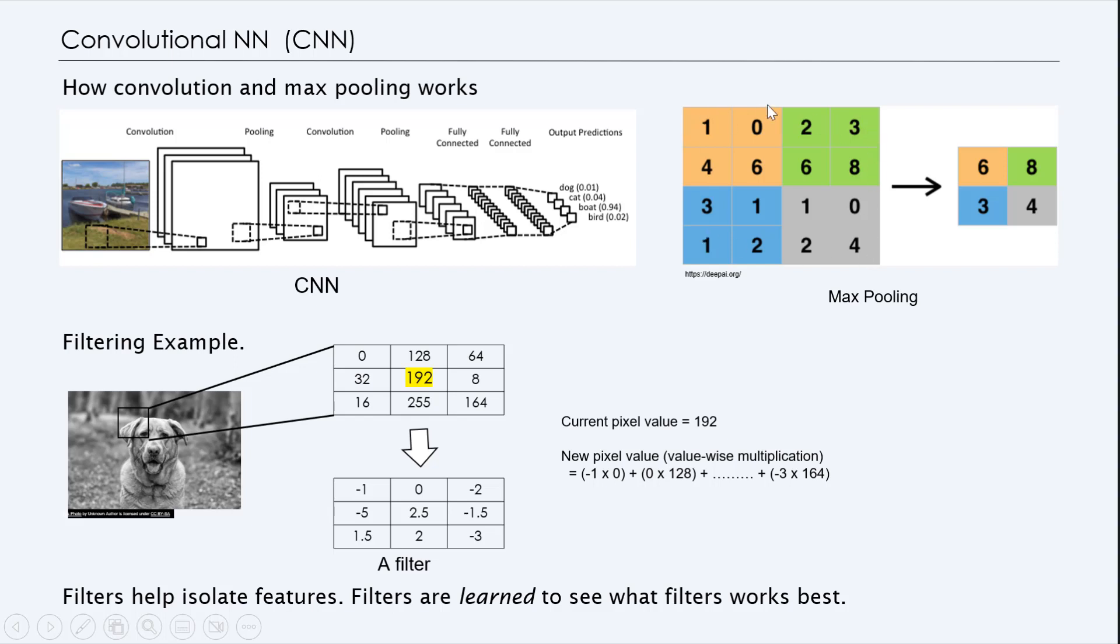For example, if you have 4x4 pixels here, 16 pixels, we can take 4x4 pixels and then find the max intensity of that picture. Like for example, this is 6, 8, 3, 4. By doing this, you can cut the size of the image by carrying those pictures.